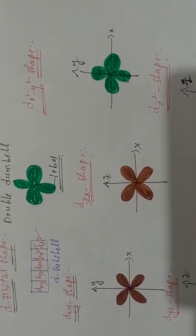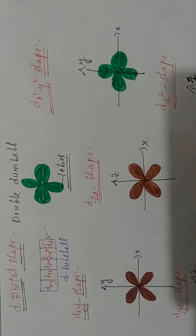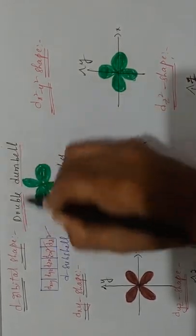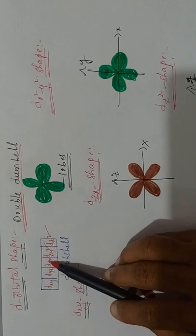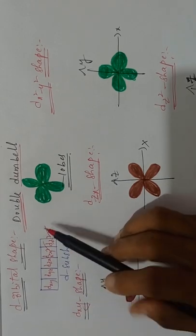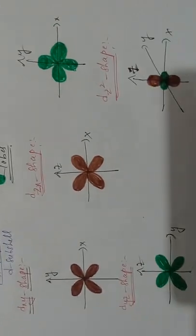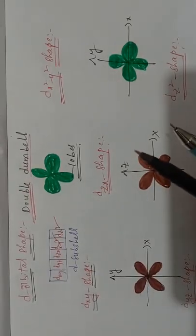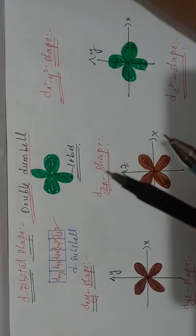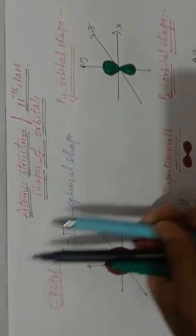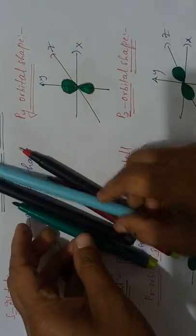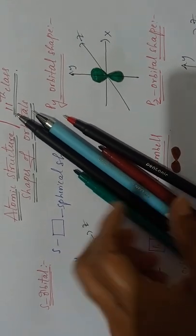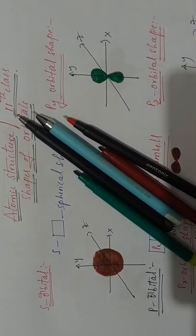D orbital shape is double dumbbell. Total in the D sub shell, five orbitals are there: D-XY, D-YZ, D-ZX, D-X²-Y², and D-Z². This is a very easy structure and an important topic — shapes of orbitals. I hope you like this video. If you like this video, please like, share, comment, and subscribe to my channel. Thank you very much, students.